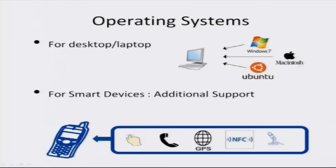What is an operating system? It allows us to manage hardware resources and share them between different applications. We have been seeing lots of operating systems running on desktops and laptops, which include Windows 7, Mac, and Ubuntu.